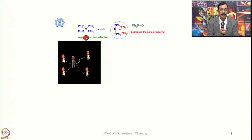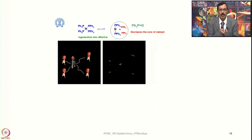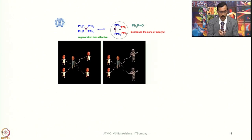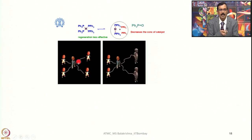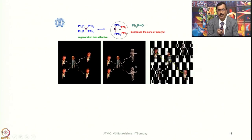Let us assume this palladium tetrakis(triphenylphosphine) — four ligands are there and the metal is here — and now we have to activate a couple of bonds. The moment you put it into solution, what would happen? Two bonds would be getting activated; as a result, what happens? The bond distance also increases, meaning they are slightly ready for cleavage, and in the next step they are completely detached.